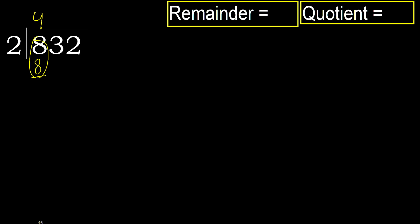Subtract: 8 minus 8 is 0. Next, bring down — eliminate 0.